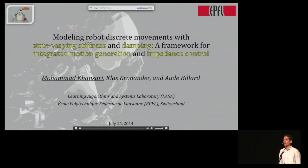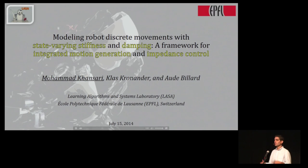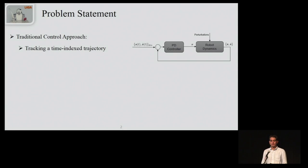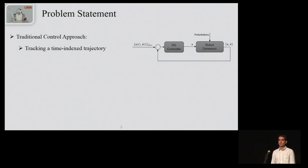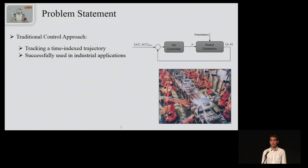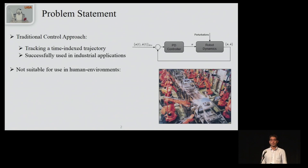Hello everyone, my name is Mohammed and I'm presenting our paper which is about introducing a new paradigm to integrate motion generation and impedance control into a single unified control policy. Before presenting our approach, let's have a look at one of the most widely used control techniques. In this approach there is a time-indexed reference trajectory which is generated offline, and then a PD controller tries to follow this reference trajectory as closely as possible. We have seen successful implementation of this control approach in many industrial applications.